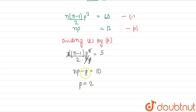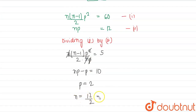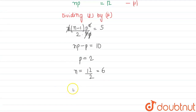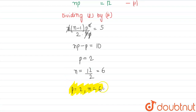Now if p = 2, substituting back into np = 12 gives n = 12/2 = 6. So we have p = 2 and n = 6 as the required solution.